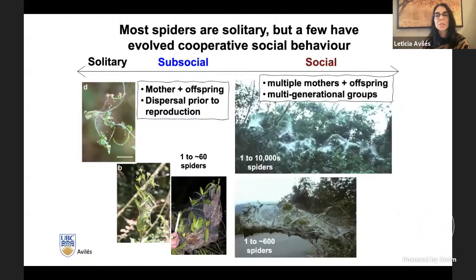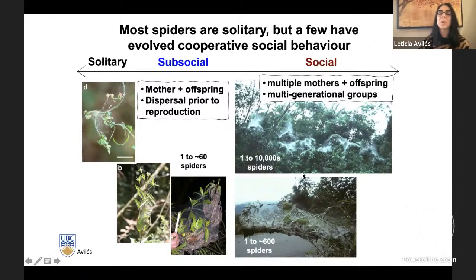But in the social species — the ones we refer to as truly social — the spiders remain together throughout their lives, from one generation to the next. The colonies can grow, depending on the species and location, to contain a few hundred individuals, a few thousand, or even tens of thousands, as in this nest I photographed covering the crown of a couple of trees in the rainforests of Ecuador.